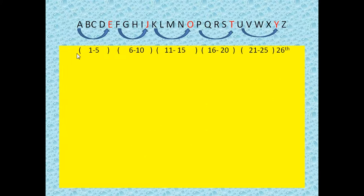Friends, you can see here, A to E comes in the 1 to 5, then F to J, 6 to 10th, K to O, 11 to 15th, P to T, 16 to 20th, U to Y, 21st to 25th, and Z is the 26th, or you can say the last letter.